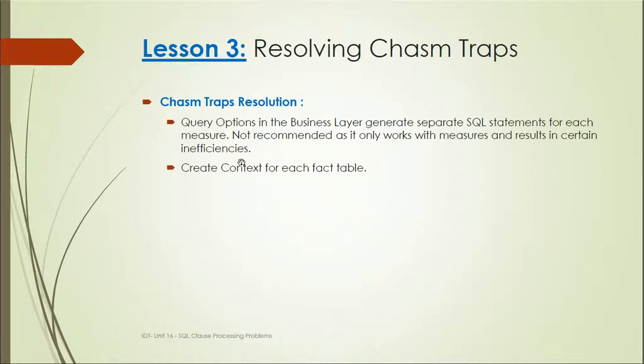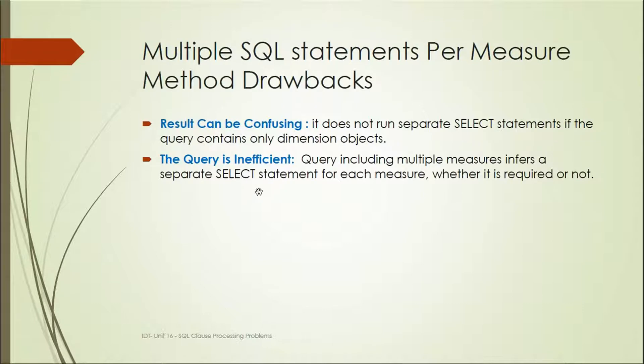How can we resolve chasm traps? We can separate the SQL statement for each measure. Not recommended as it only works with measures and results in certain incorrect context for each fact table.